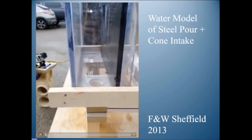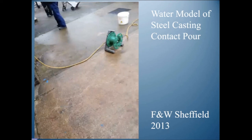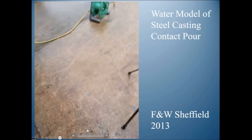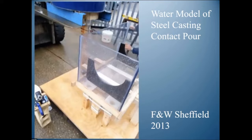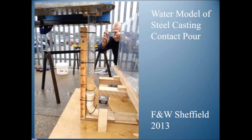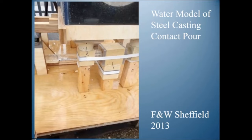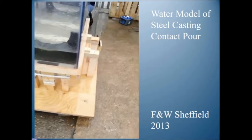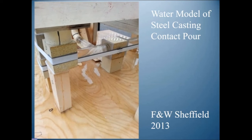Now let us look at contact pouring. Here is the same setup, but with a contact pouring arrangement. It spends the first few seconds doing some damage, but now it becomes pretty much clear. There are no bubbles — we cannot even see movement of the water because the flow is perfect.